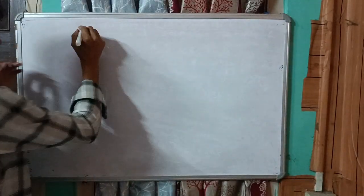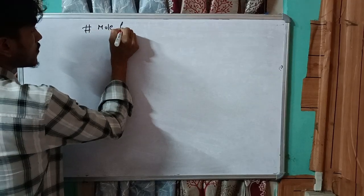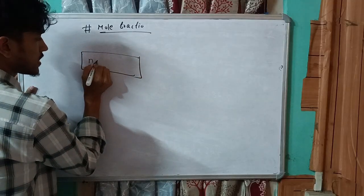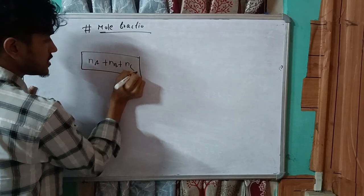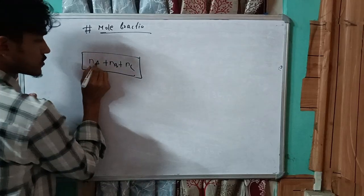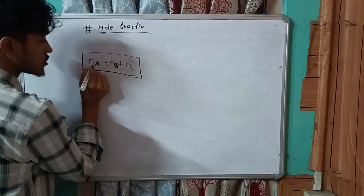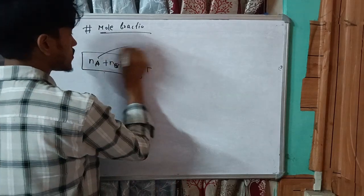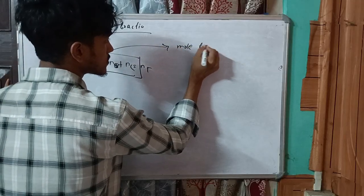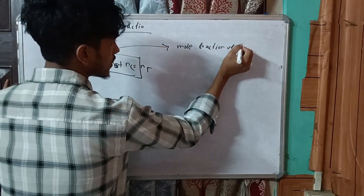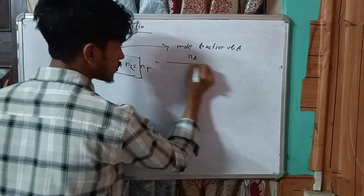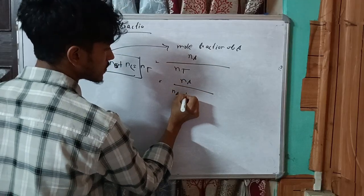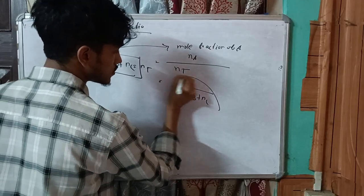Now let's move to mole fraction. Mole fraction: if a mixture has components A, B, and C with moles Na, Nb, Nc respectively, the total moles = Na + Nb + Nc. The mole fraction of A is Na divided by (Na + Nb + Nc).